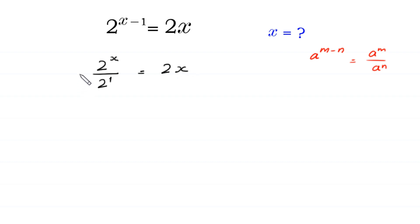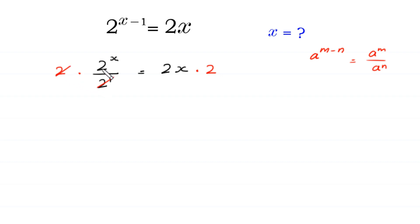Now from here we multiply both sides of this equation by 2. At the right side we multiply by 2, so this 2 will be cancelled with this 2, and at the left side we are left with 2 to the power x, which is equal to 4x.